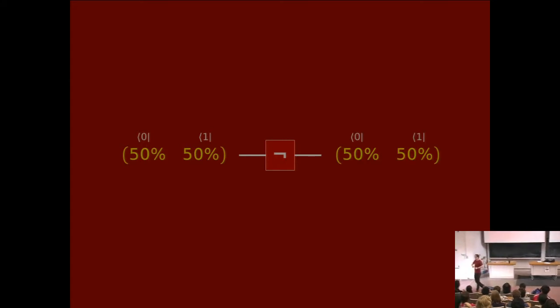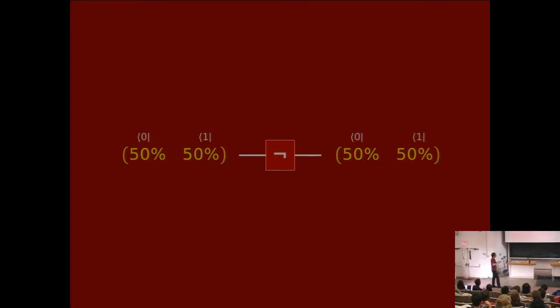Let's say we start with a really tiny circuit with just one negation gate, but we flip a coin to decide if the input will be zero or one. Just like in the random walks lecture, I'm going to represent probability distributions by row vectors. This means a bit that's 50% of the time zero and 50% of the time one. Now I pass it through this gate — it switches whatever it was, but still the output has the property that 50% of the time it's zero and 50% of the time it's one.